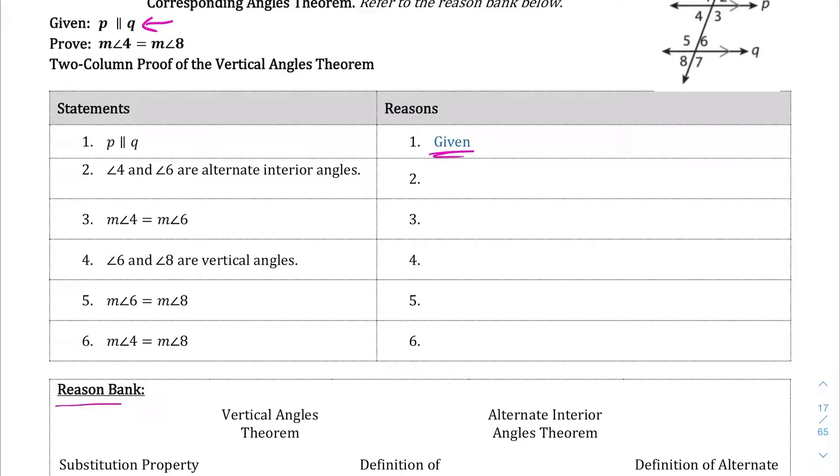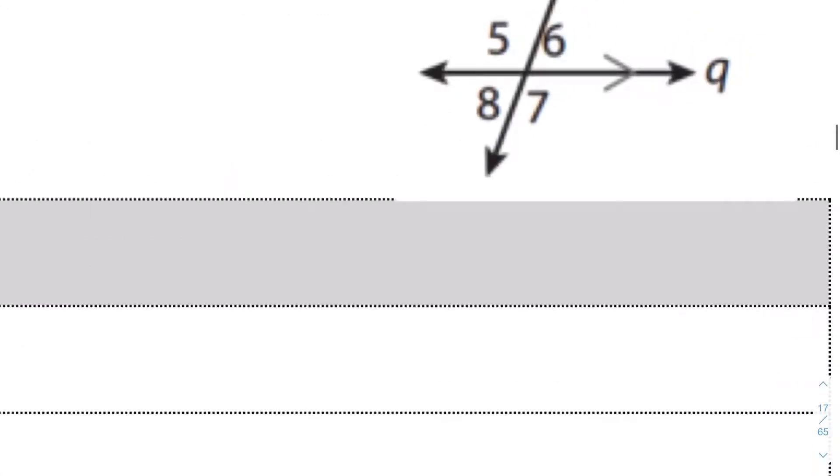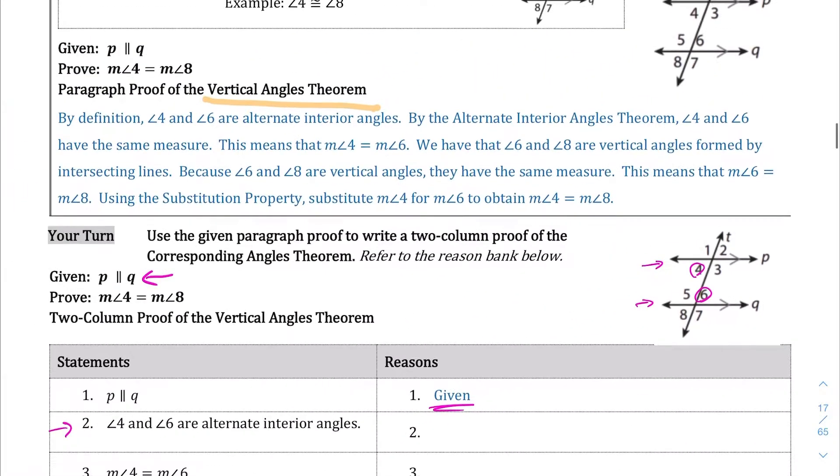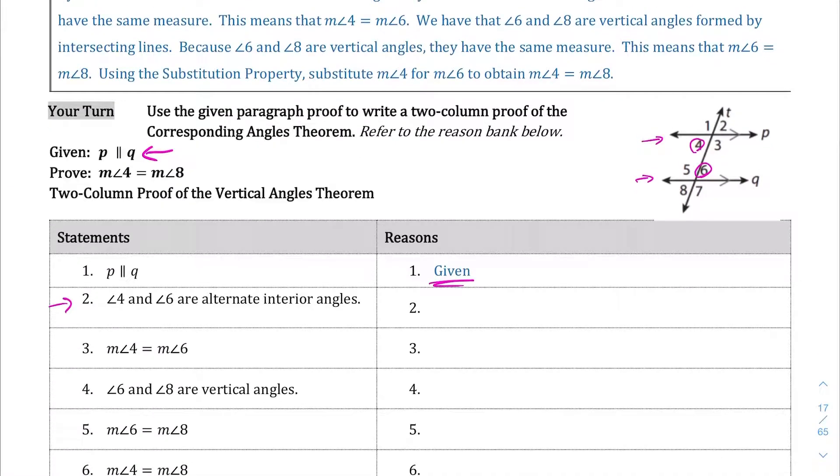We have all of our reasons down here in the reason bank. If we go to statement 2, angles 4 and 6 are alternate interior angles. If we look over here at the diagram, 4 and 6, they're on the interior of those two lines and they are on alternate sides. Therefore, this is the definition of what an alternate interior angle is. So let's write definition of alternate interior angles.